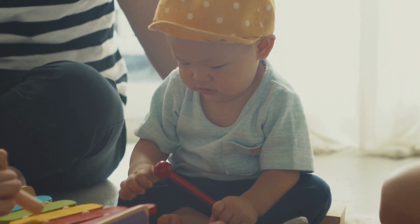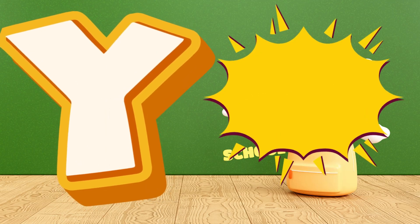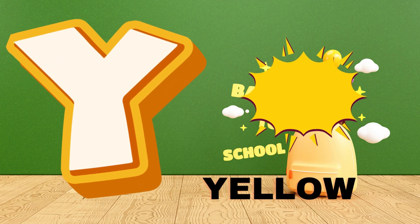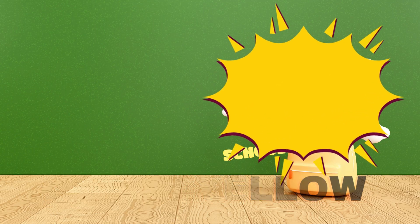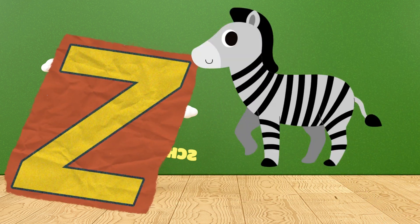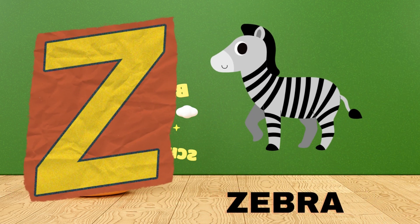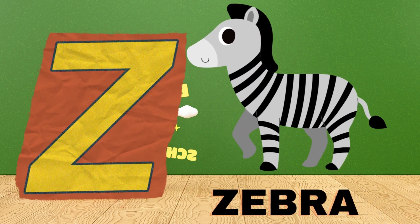Y is for yellow, y-y-yellow. Z is for zebra, z-z-zebra.